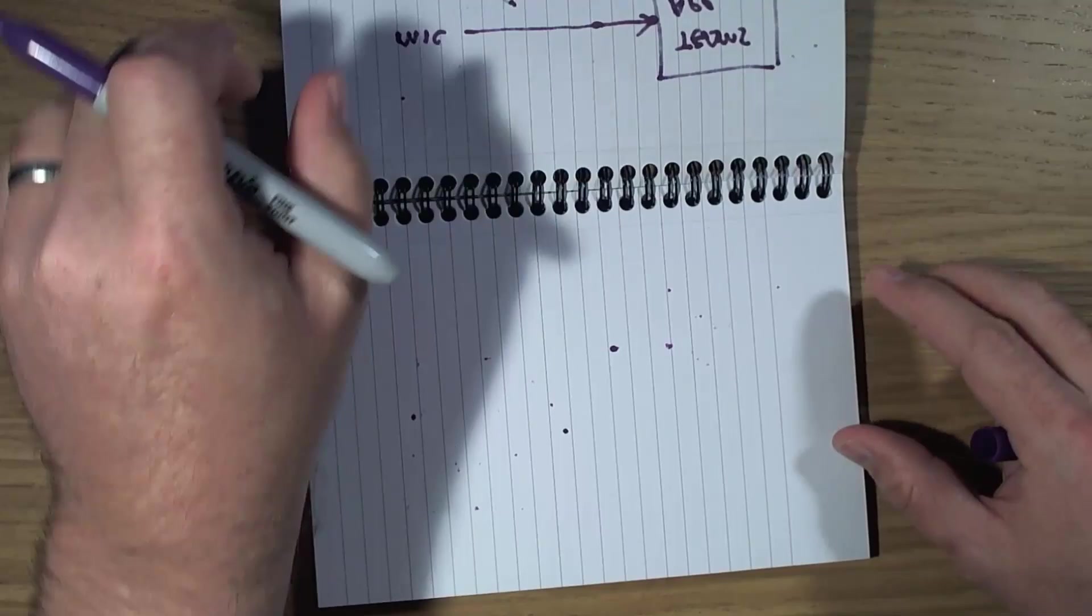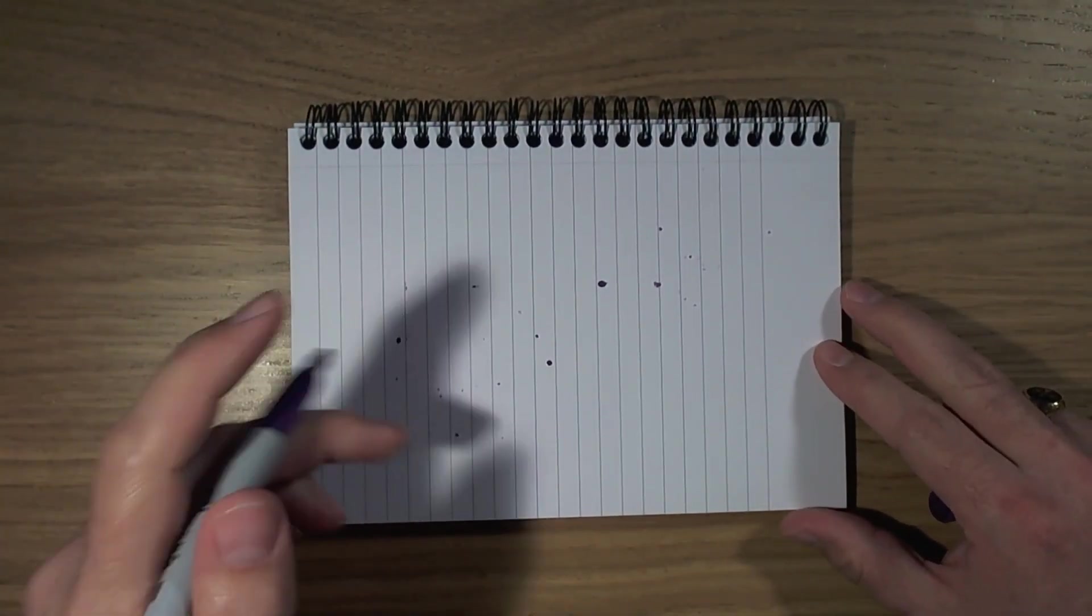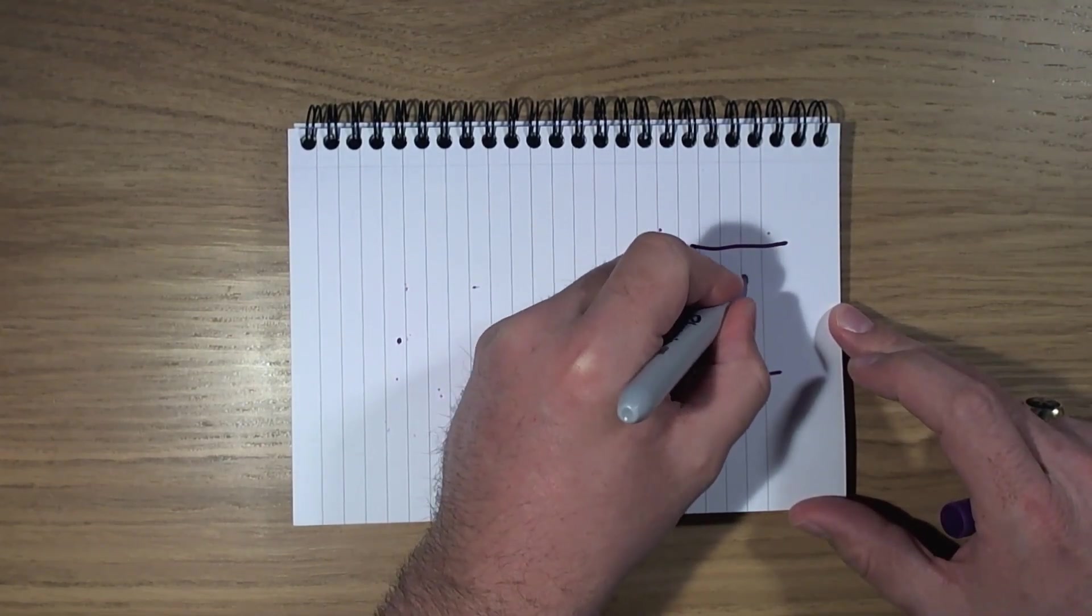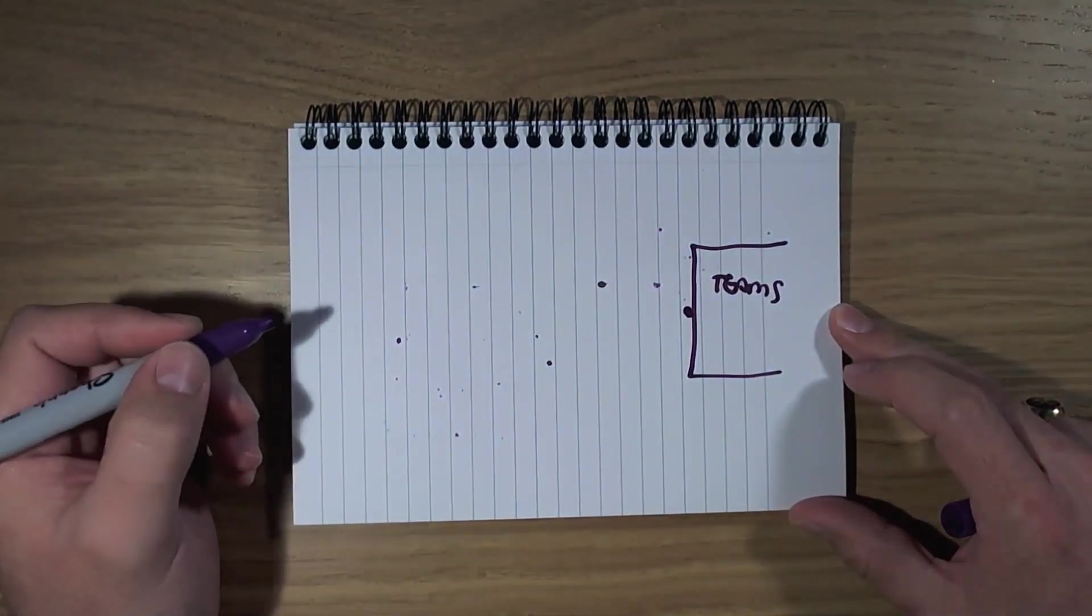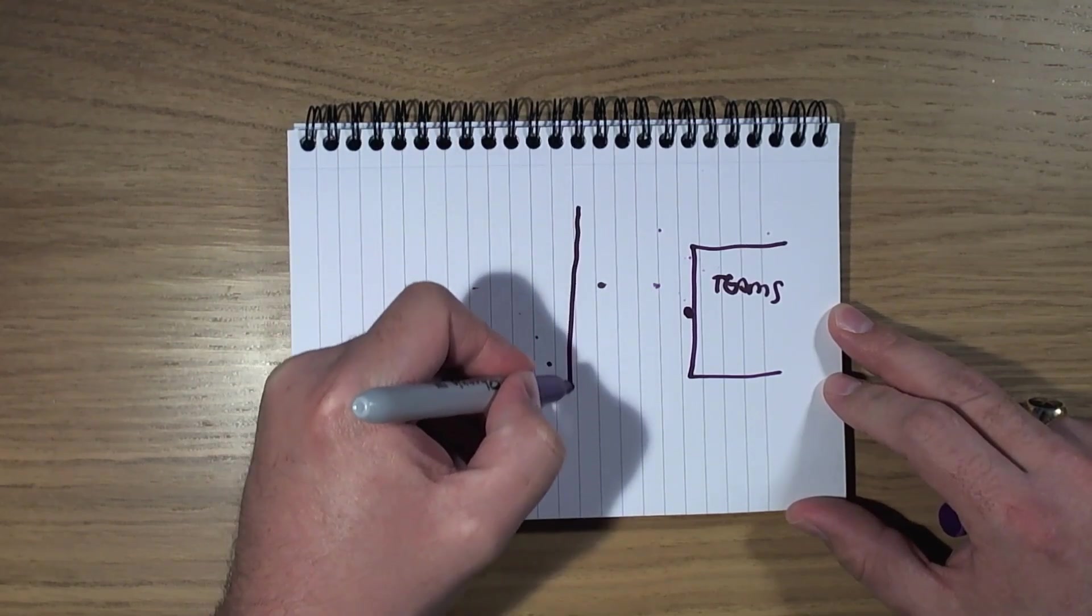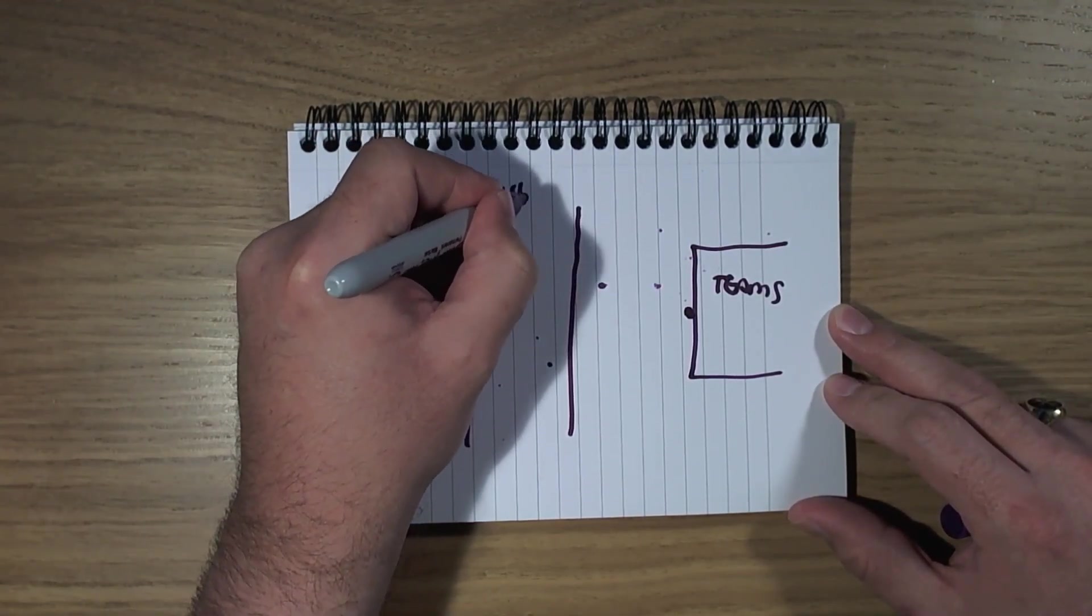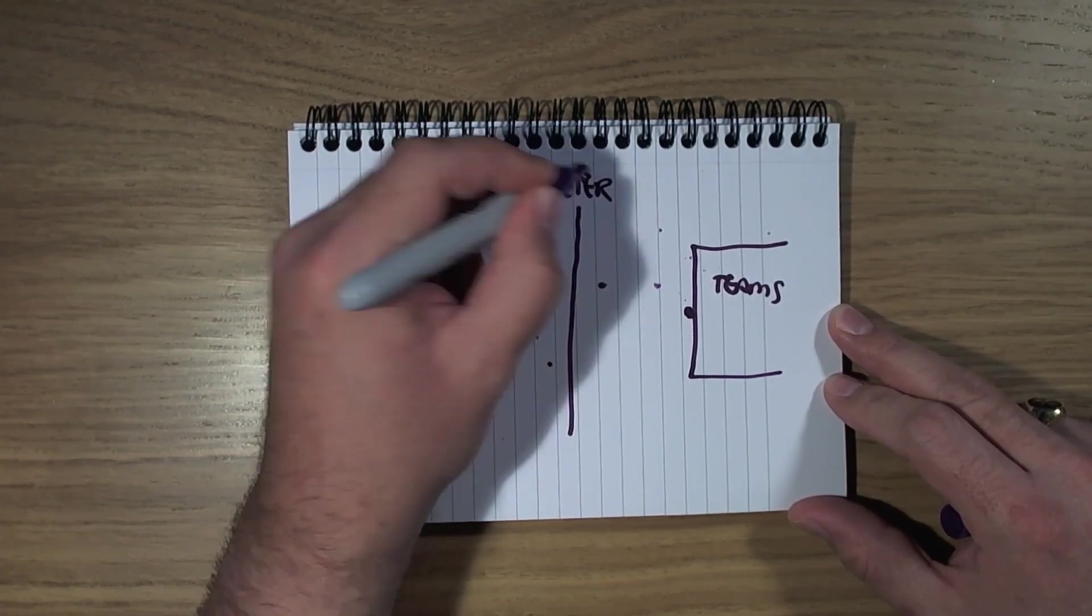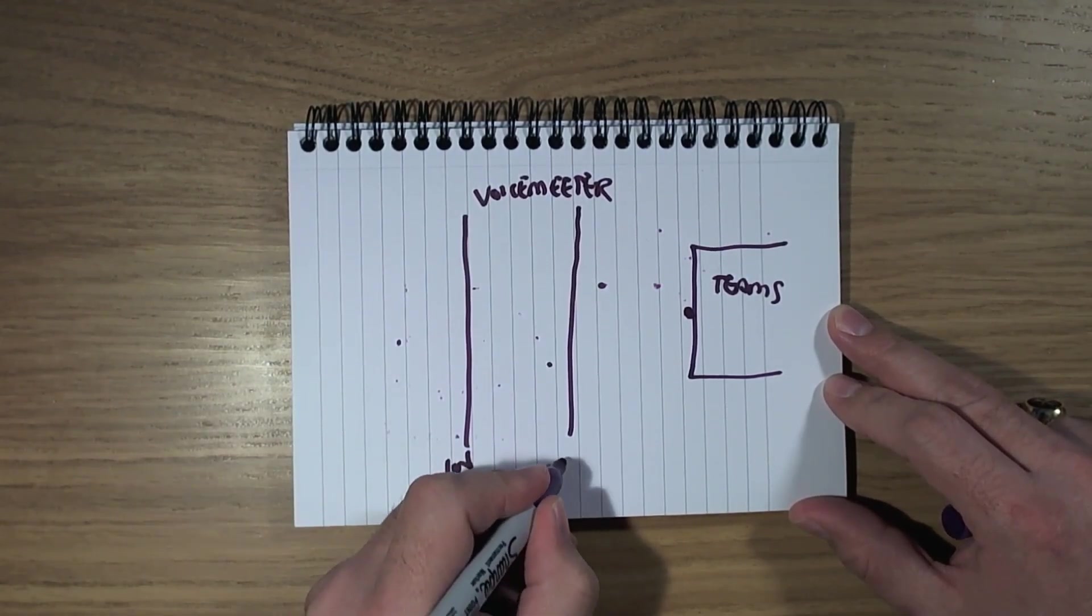So there's a way that we can overcome this. We can use an application called VoiceMeter. So in the example of VoiceMeter, what we have, again, here is Teams, so I'll put Teams here. And Teams only has one input. And what we have in the middle is our application VoiceMeter, like so. And that has inputs, and it has outputs.